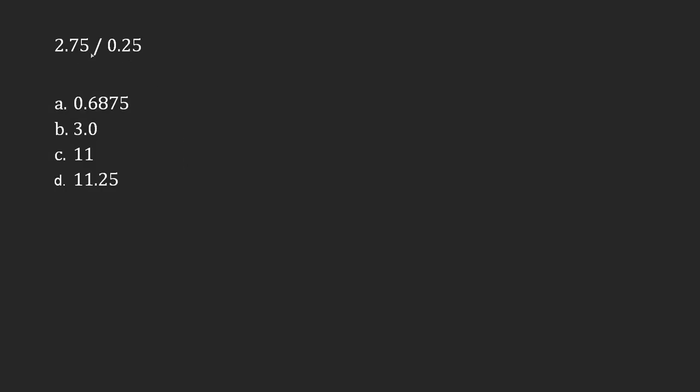In this question, we're being asked to divide one decimal by another decimal. Of course, you can do this on your calculator. Incidentally, 2.75 and then the slash means 2.75 divided by 0.25. This also could have been written as 2.75 over 0.25.